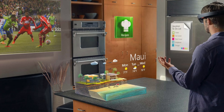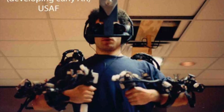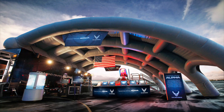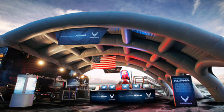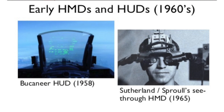Augmented reality brings out the components of the digital world into a person's perceived real world. The first functional AR systems that provided immersive mixed reality experiences for users were invented in the early 1990s, starting with the Versatile Fixtures Lab system developed at the USAF Air Force Armstrong Labs in 1992. However, the field truly began much earlier — while you can find earlier examples of informational overlays layered on top of the physical world, the first examples of the physical world combined with computer-generated information occurred in the 1960s.